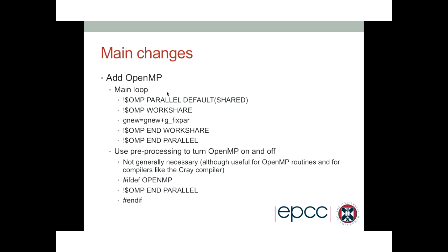How do we actually add this to the code? We add a parallel region at the top of the time_advance subroutine with default shared, and an end parallel region at the bottom. The only other change was that at the end of the subroutine some array syntax work was being done, so we added a workshare region to parallelize that. We could also have manually turned it into a do loop with an OpenMP do directive, but using workshare involved changing the code less, and the implementation of workshare versus do in OpenMP is relatively comparable.